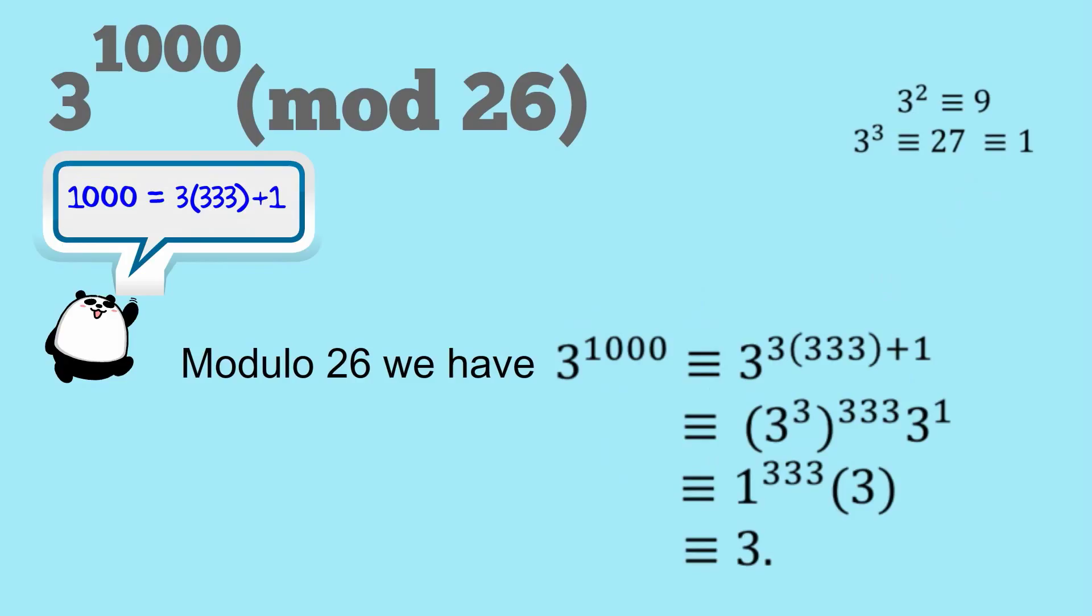So modulo 26, we have 3 to the 1000 is equivalent to 3. And now I represent that 1000 power in terms of multiples of 3 plus the remainder. So 3 times 333 plus 1. So that's equivalent to 3 cubed all to the power of 333 times 3 to the power of 1, and that is equivalent to 1 to the power of 333 times 3, and that is equal to 3.